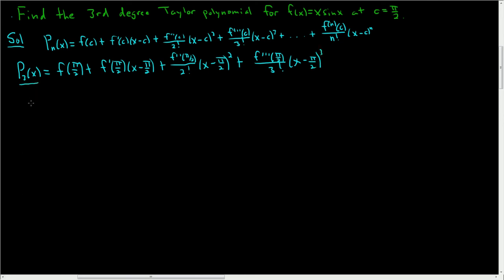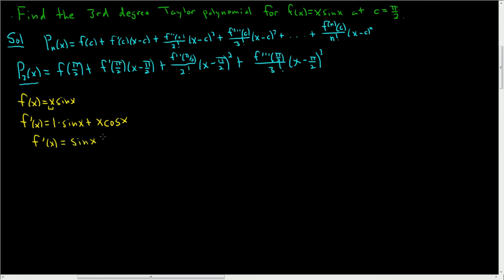What I like to do is work in steps, starting by taking derivatives. We have f of x equals x sine x. Taking the derivative using the product rule: the derivative of the first piece (1) times the second (sine x), plus the first piece (x) times the derivative of the second (cosine x). So f prime of x equals sine x plus x cosine x.